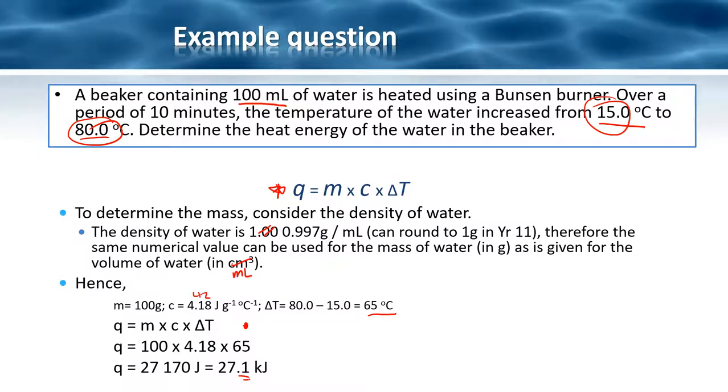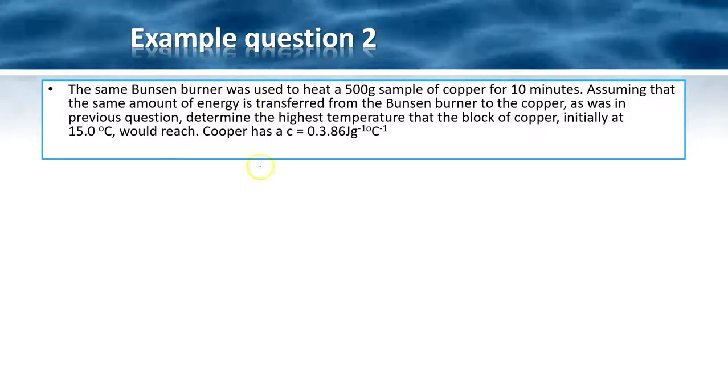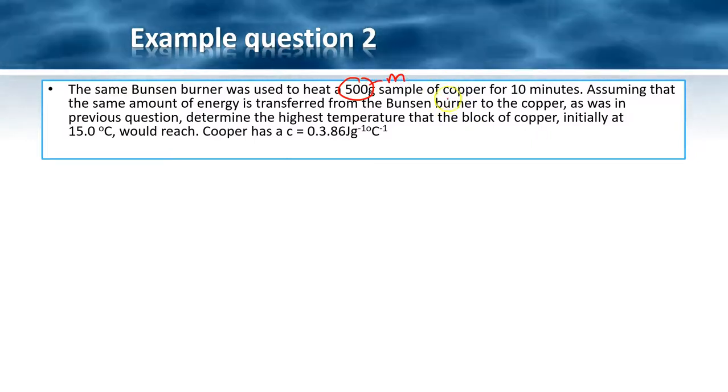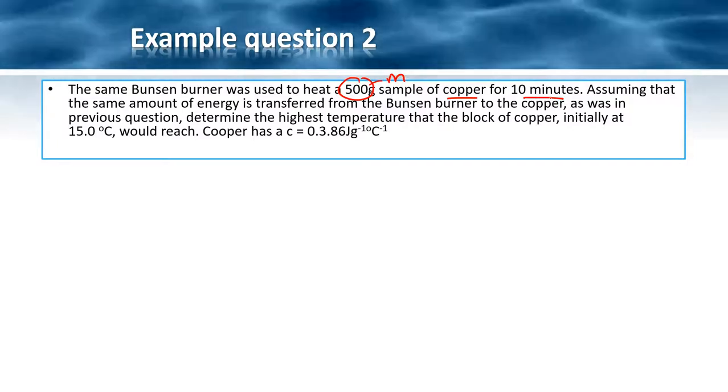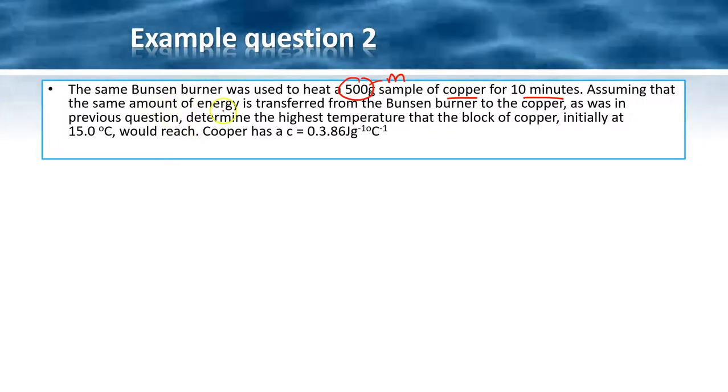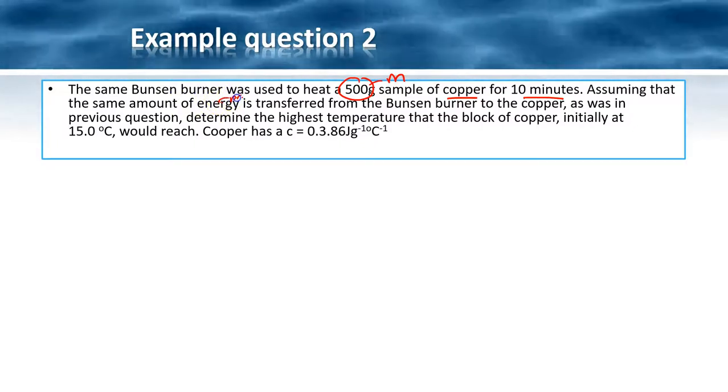Let's look at one more question. If we use the same Bunsen burner to heat a 500 gram sample of copper for 10 minutes, the mass is given this time. Time doesn't come into my equation, so all I need to know is that it has been heated for the same time, so we assume the same amount of energy is transferred. We're going to get this from the previous question.